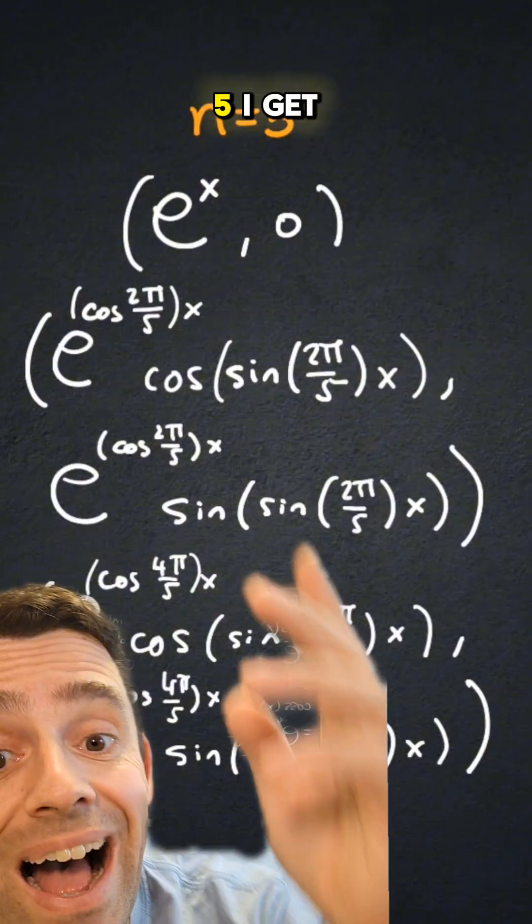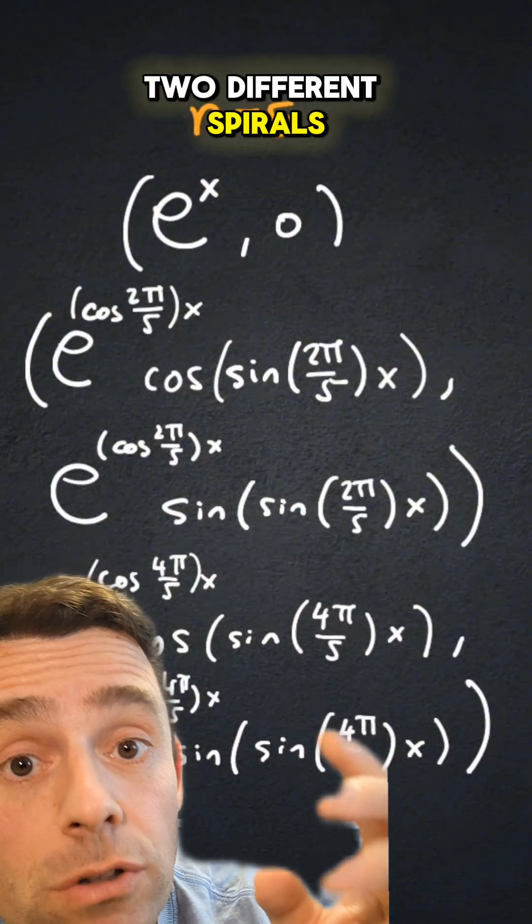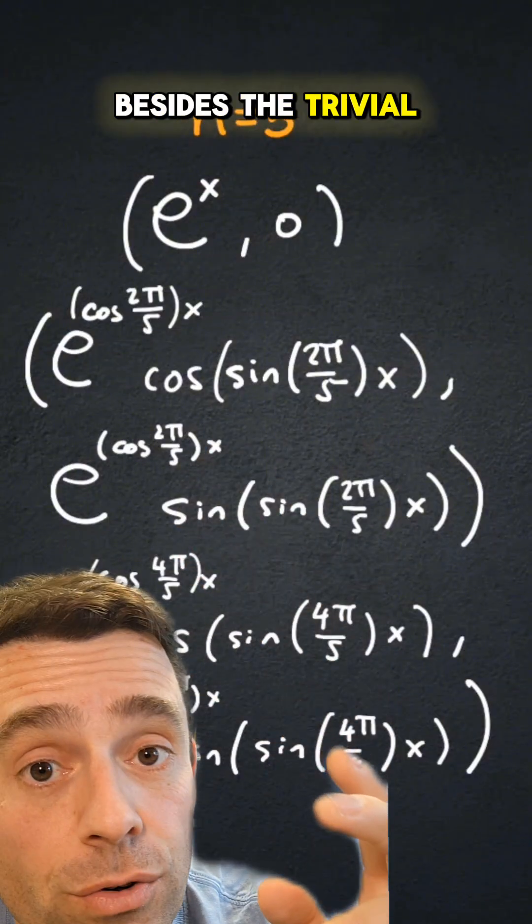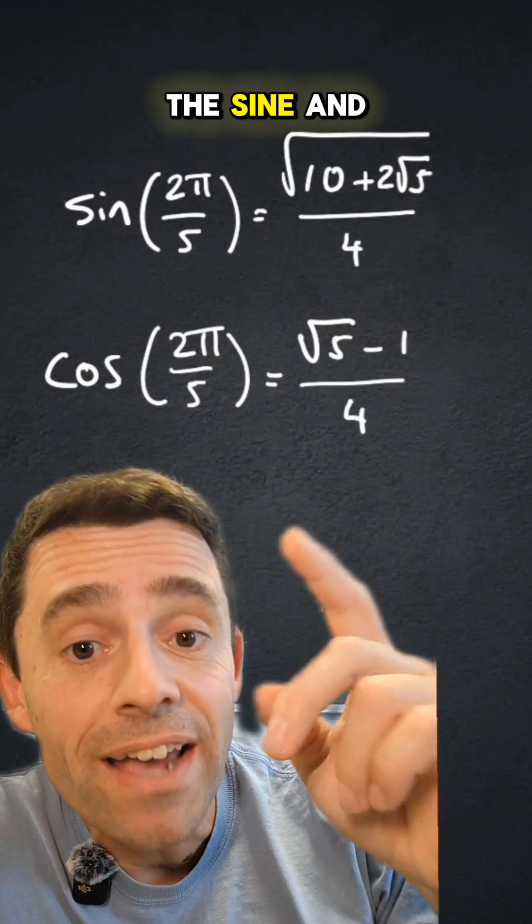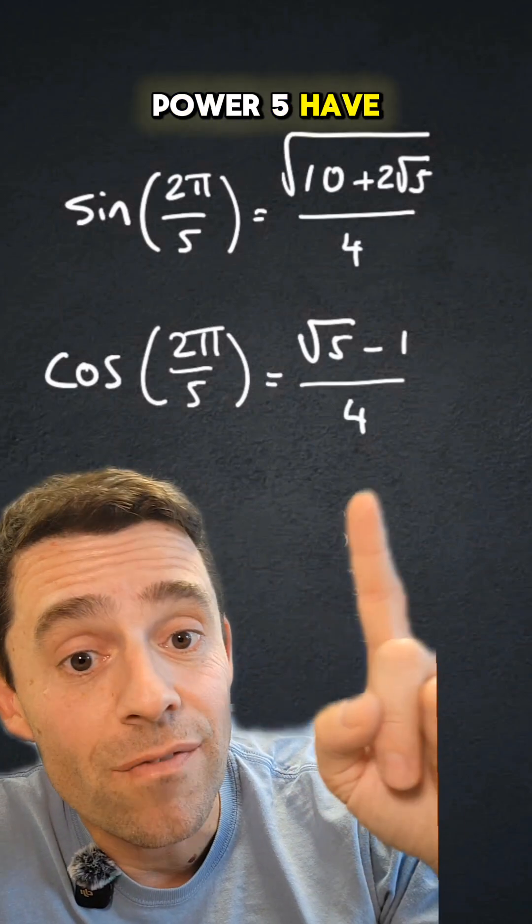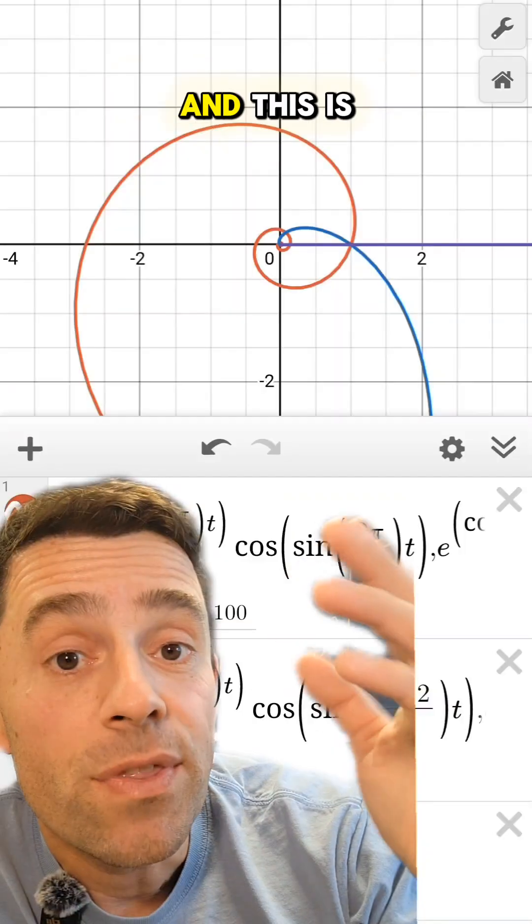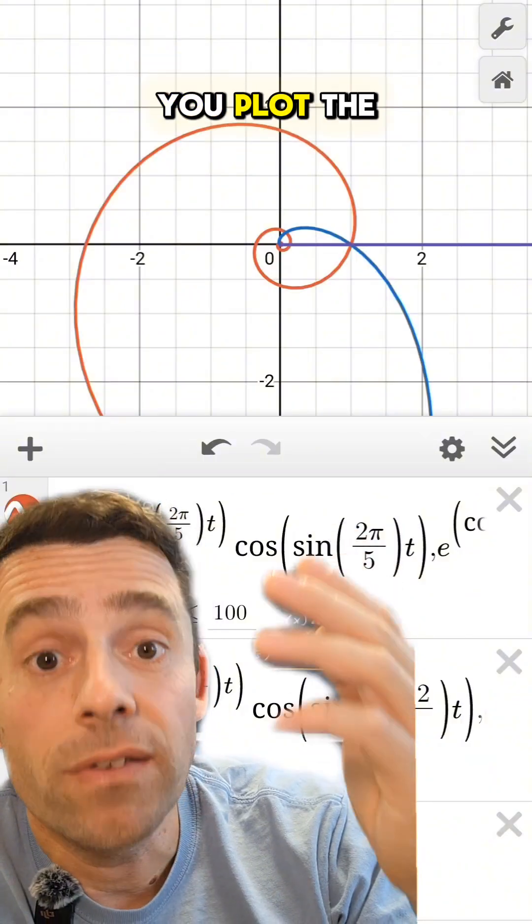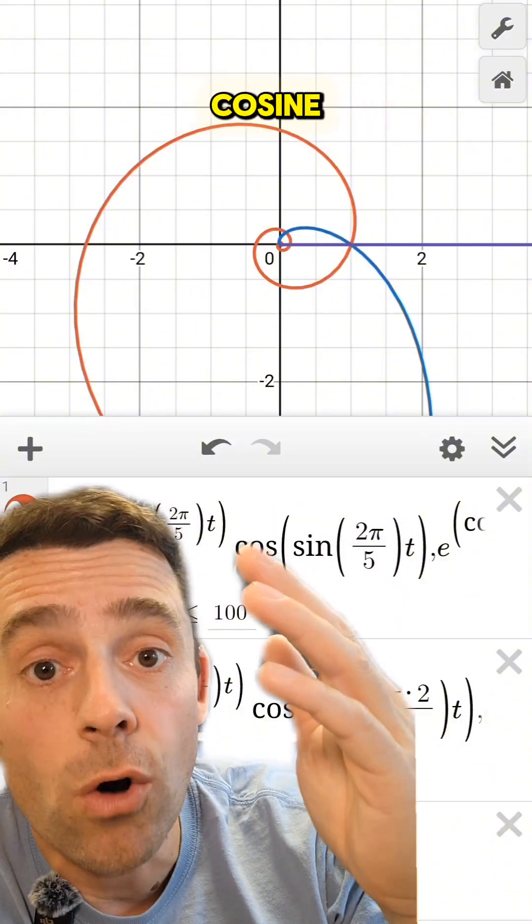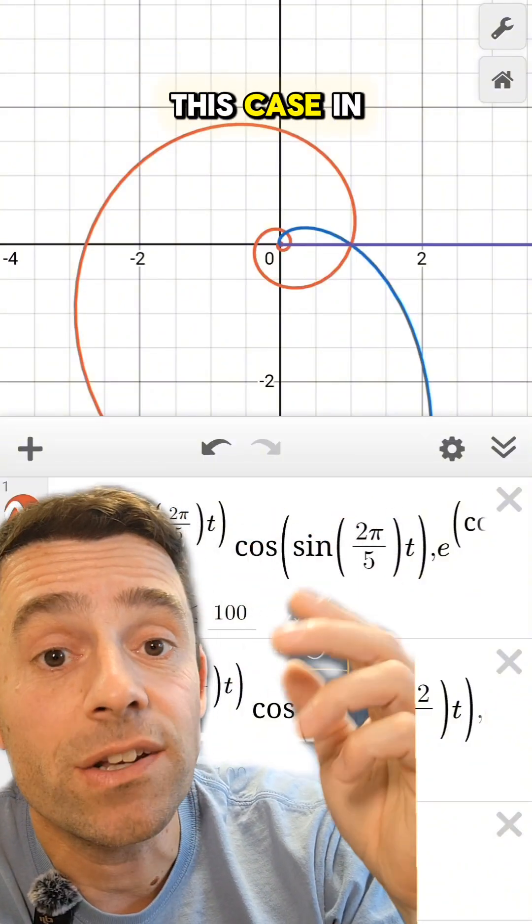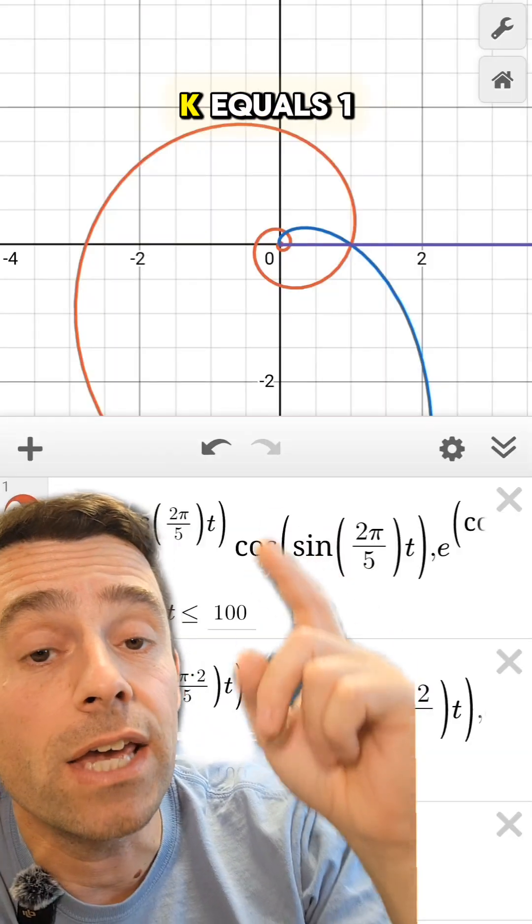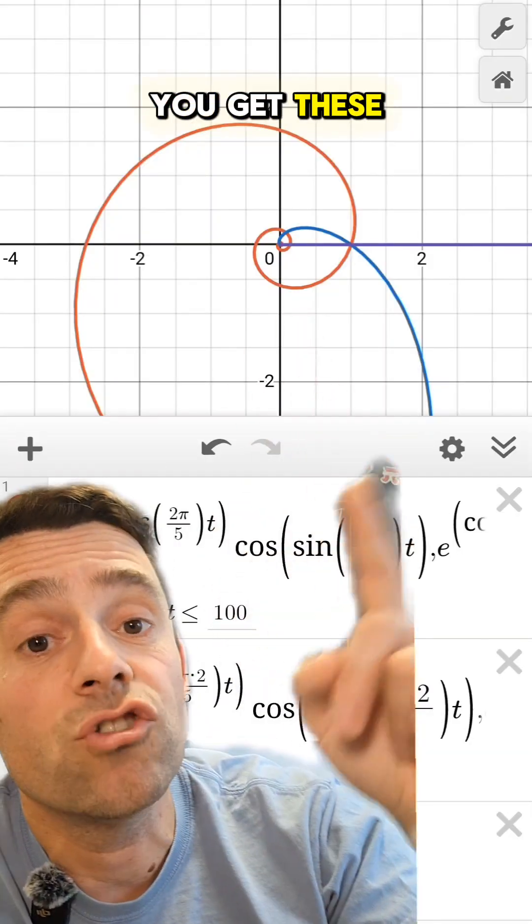For n equals 5, I get two different spirals that are actual spirals besides the trivial solution. By the way, the sine and cosine of 2 pi over 5 have these algebraic values, and this is what happens when you plot the graph of s cosine s sine. In the case n equals 5 and k equals 1 and 2, you get these two spirals.